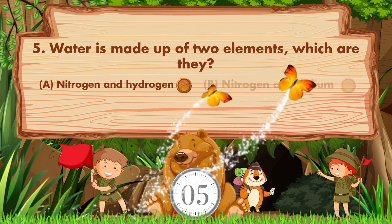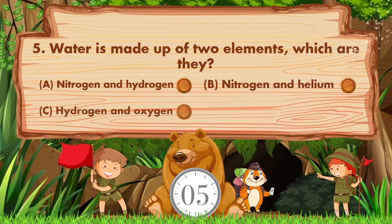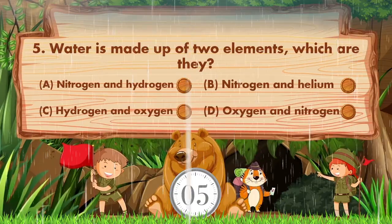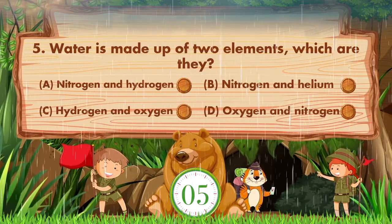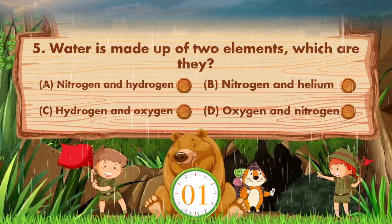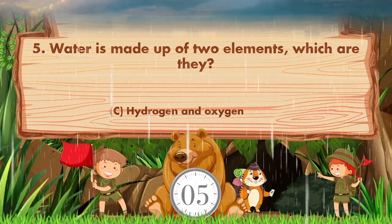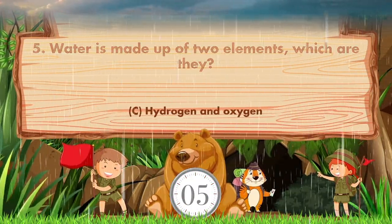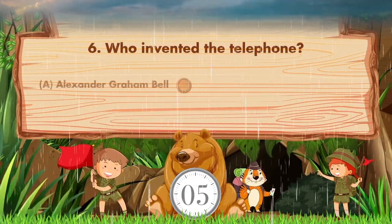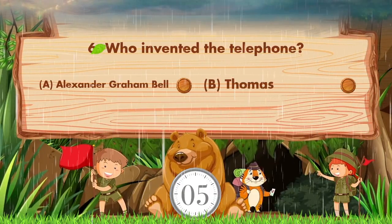Water is made up of two elements — which are they? Option A is nitrogen and hydrogen, B is nitrogen and helium, C is hydrogen and oxygen, D is oxygen and nitrogen. The answer is option C, hydrogen and oxygen.